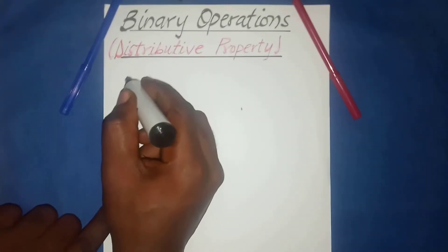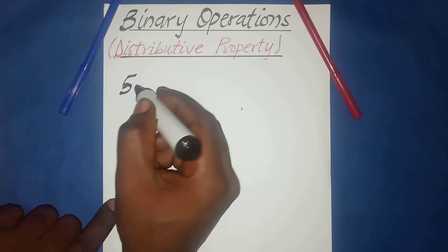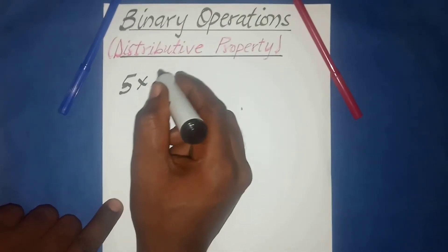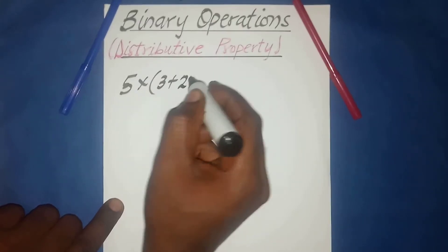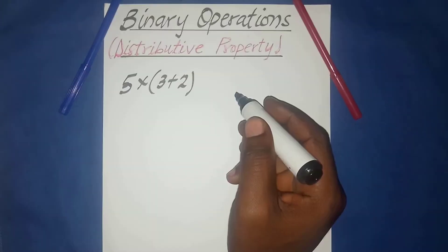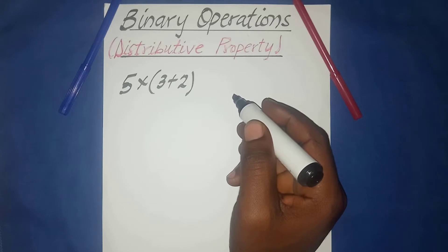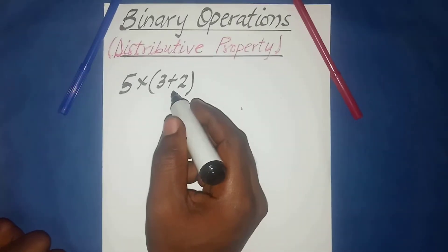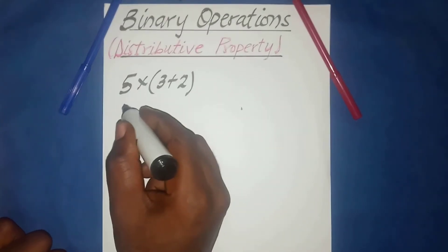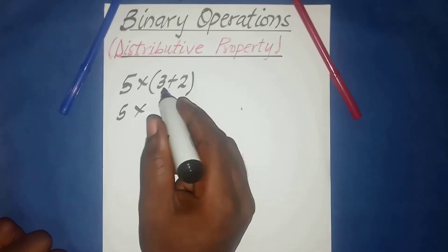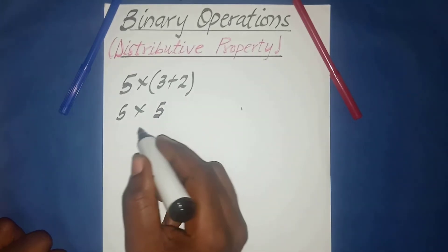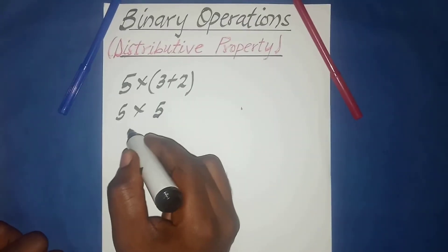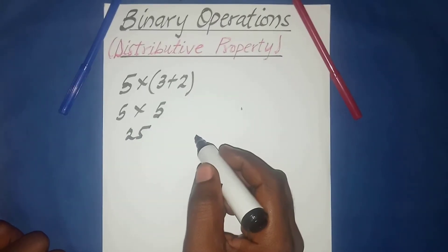For example, if we have a problem like five times three plus two — five times a group of two quantities (three plus two) — we have to simplify. We can use the basic order of operations by multiplying the five by the group, so five times three plus two equals five times five, which is twenty-five.